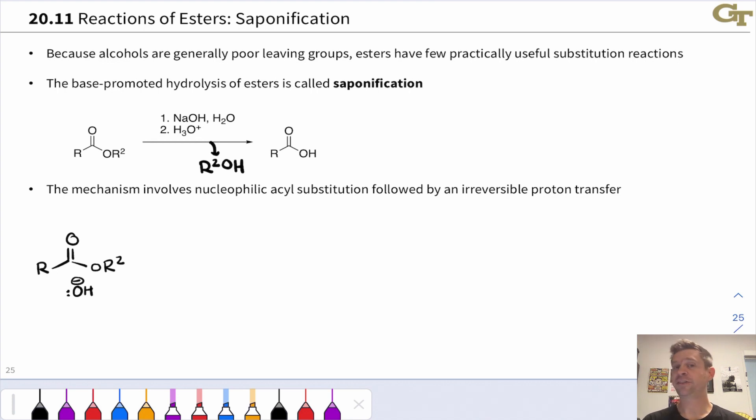Under basic conditions, they are susceptible to hydrolysis back to carboxylic acids, and the base-promoted hydrolysis of esters is called saponification. It has this name because the carboxylate salts that were generated were used and continue to be used as soap. Saponification comes from the idea that the resulting products, if we leave them as the carboxylate salts, are soap.